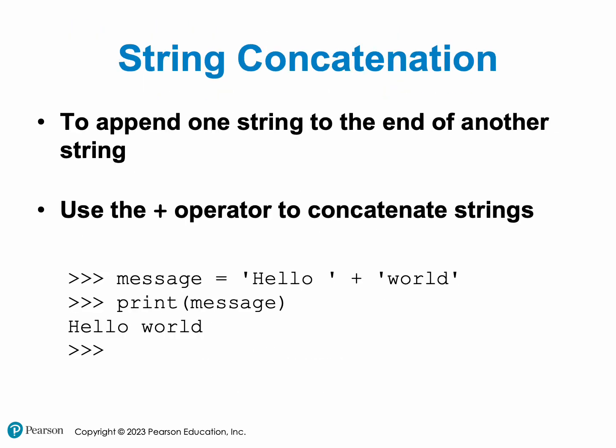Hey guys, welcome to part 2 of chapter 2 of our Python class — Python lectures. Today we're going to be talking about string concatenation, picking up right where we left off. String concatenation, as you already know from PLG101, is just a term for saying whenever you want to add one string to the end of another string. In Python you have to use the plus sign if you want to connect two strings together.